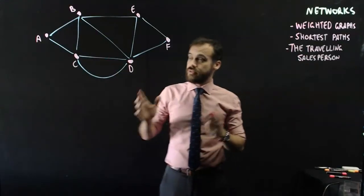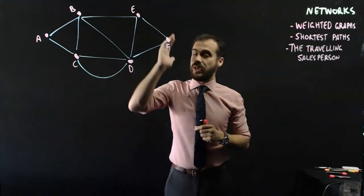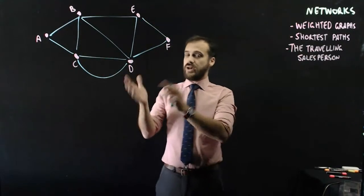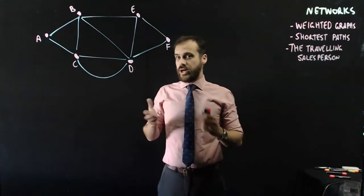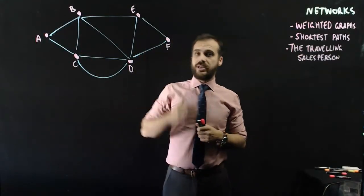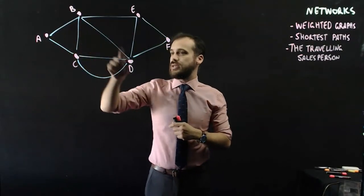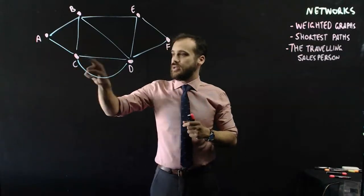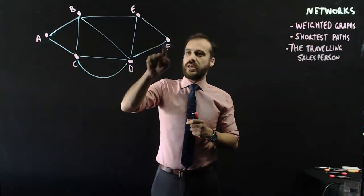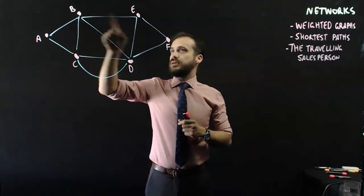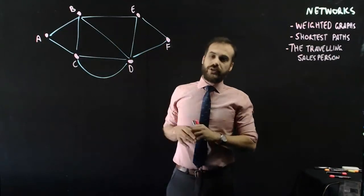We've got six towns, A, B, C, D, E, and F, and these towns have roads between them. If I asked you to get from town A to town F, you've got some options here. You can go from A to B to D to F. You can go from A to C, scenic route through D and F. You can go A, B, E, and F. There are a lot of different ways.